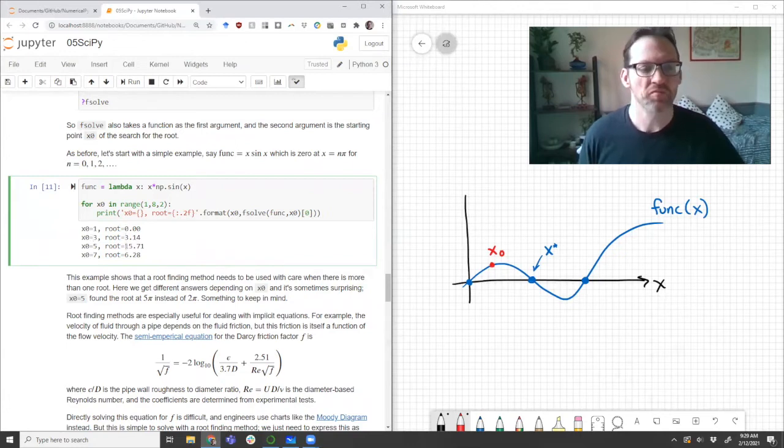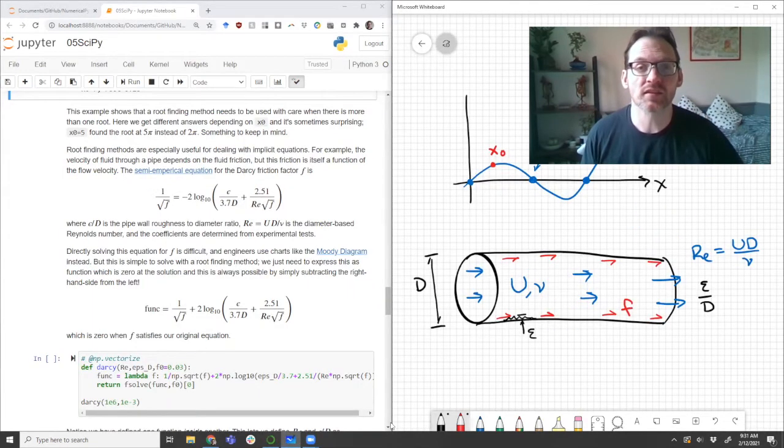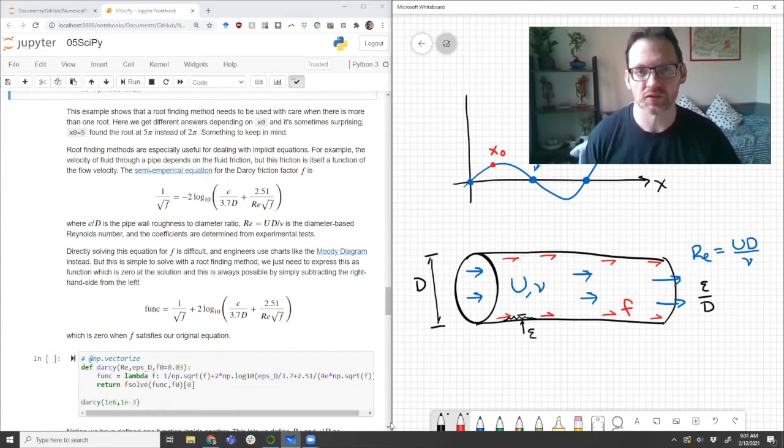And the roots that it's found are zero times pi, then pi, which is close to three. But then five pi, which is not particularly close to the starting point of five. And then two pi, which is pretty close to seven. So this is a good warning sign here. The initial condition for these kind of methods really is important, especially for functions with more than one root. And sometimes the results can be somewhat surprising.